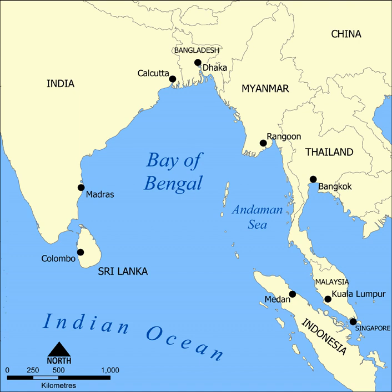The Bay of Bengal occupies an area of 2,172,000 square kilometres. A number of large rivers flow into the Bay of Bengal: the Ganges-Hooghly, the Padma, the Brahmaputra-Jamuna, the Barak-Surma-Meghna, the Irrawaddy, the Godavari, the Mahanadi, the Brahmani, the Baitarani, the Krishna, and the Kaveri.